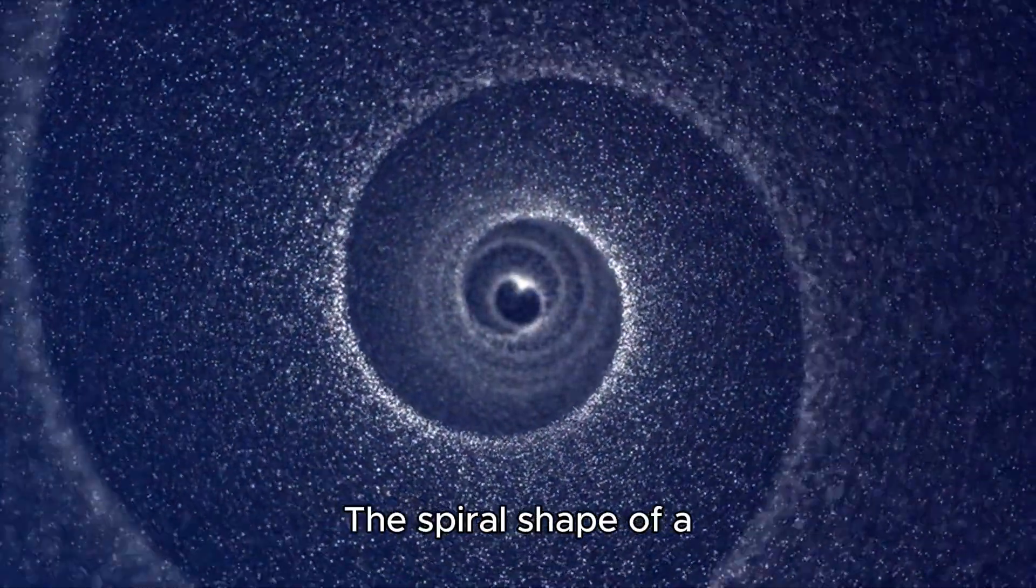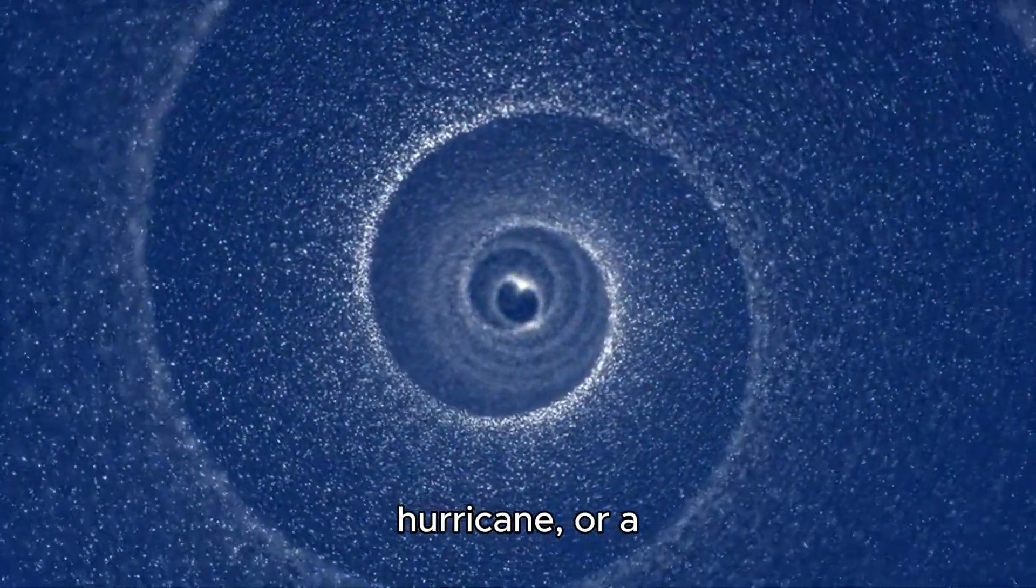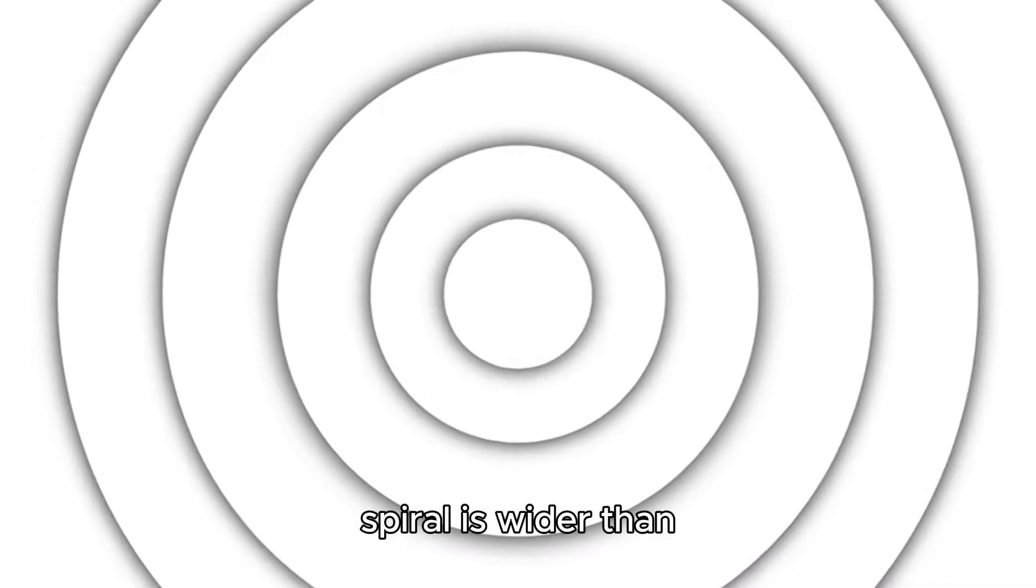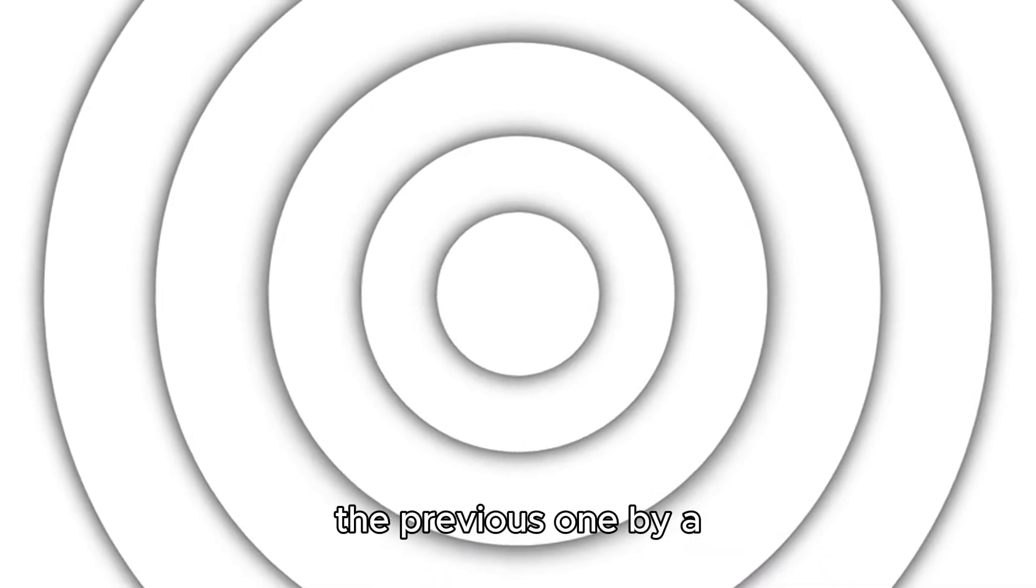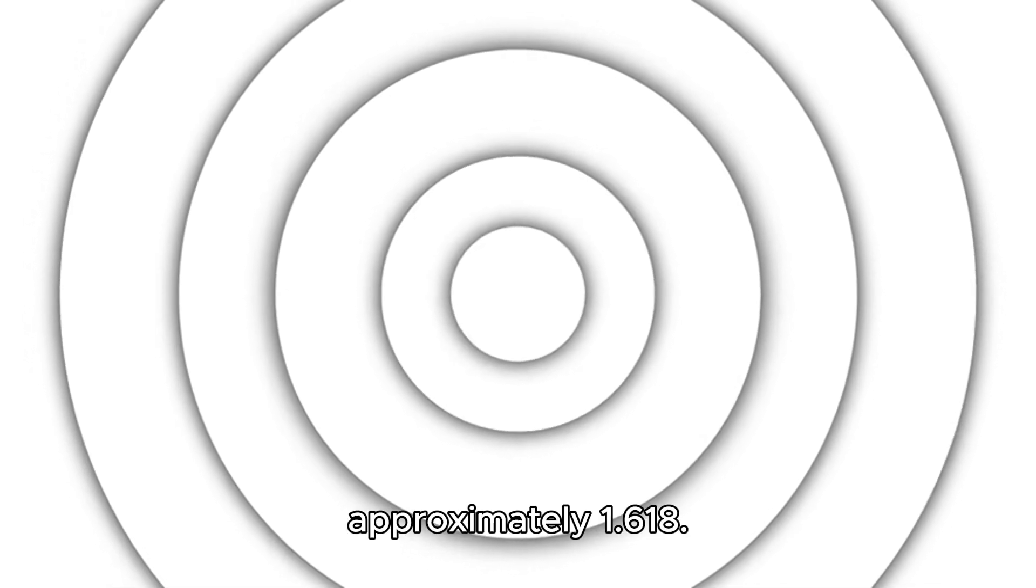Some examples are the spiral shape of a nautilus shell, a hurricane, or a galaxy follows the Fibonacci series. Each turn of the spiral is wider than the previous one by a factor of the golden ratio, which is approximately 1.618.